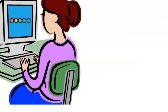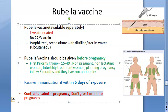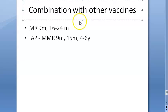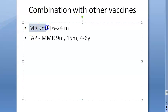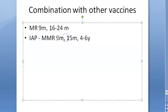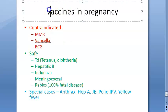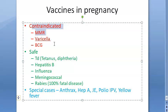The vaccine can be combined with others. Under the national immunization schedule, the MR vaccine is given at 9 months and 6–24 months (two doses). The Indian Academy of Pediatrics schedule uses MMR at 9 months, 15 months, and 4–6 years (three doses).